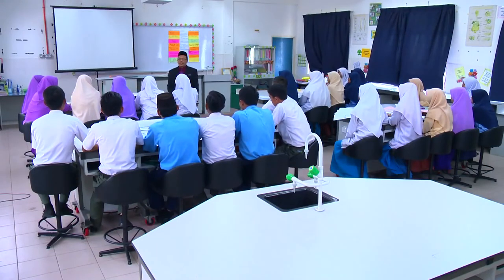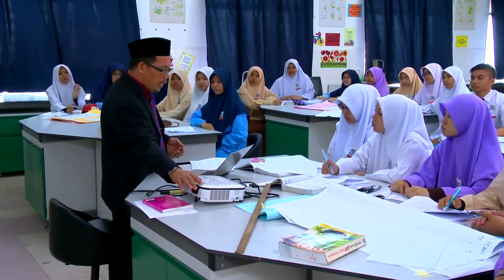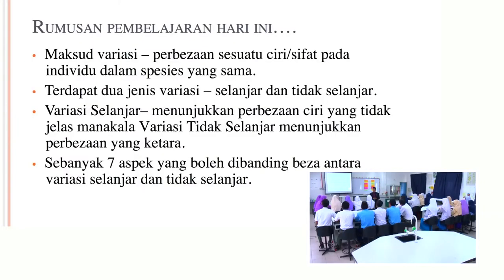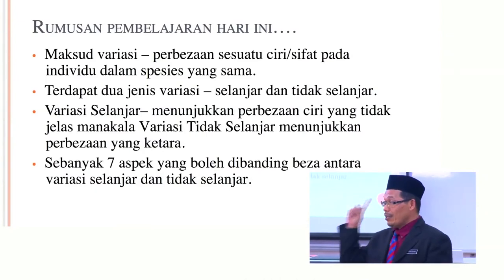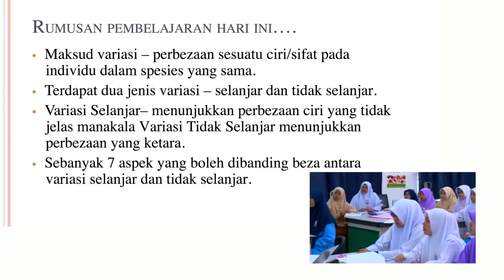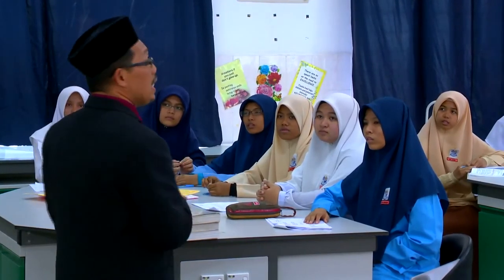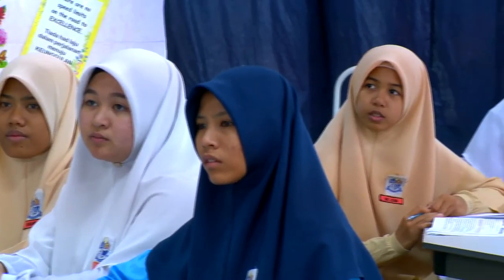Okey, seterusnya kita masuk ke fasa rumusan — apa yang kita telah pelajari pada hari ini. Rumusan yang dapat kita simpulkan ialah: pertama, variasi ialah pembezaan sesuatu ciri atau sifat pada individu dalam spesies yang sama. Terdapat dua jenis variasi: variasi selanjar dan variasi tidak selanjar. Variasi selanjar menunjukkan perbezaan sifat yang tidak ketara, manakala variasi tidak selanjar menunjukkan perbezaan sifat yang sangat ketara. Dalam perbandingan antara variasi selanjar dengan tidak selanjar, ada tujuh perbezaan.